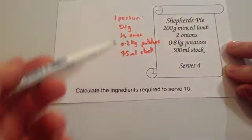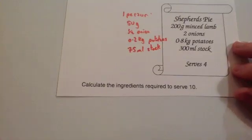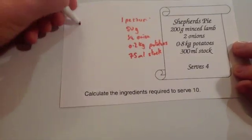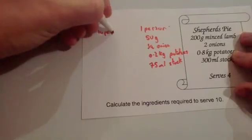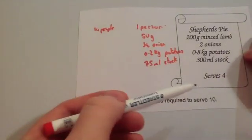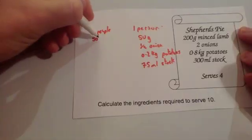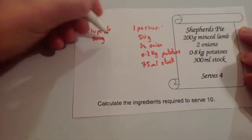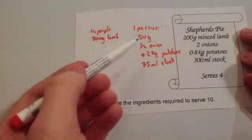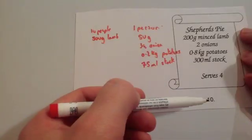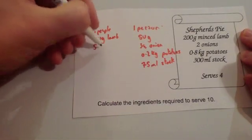So that's what one person needs. We need it for 10, so we're going to times all these by 10 to find out for 10 people. So 10 times 50 is 500 grams of lamb. Half an onion times 10 — 0.5 times 10 is 5 — so you need 5 onions.